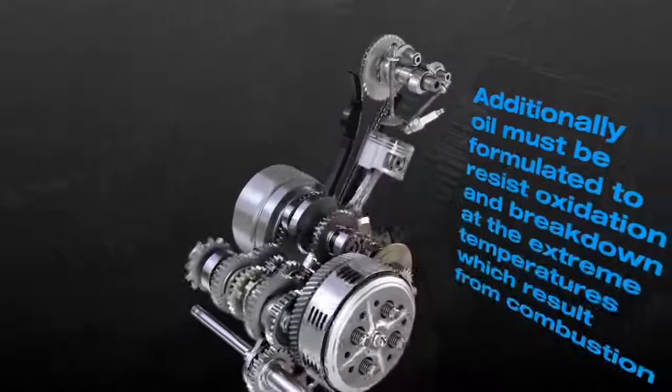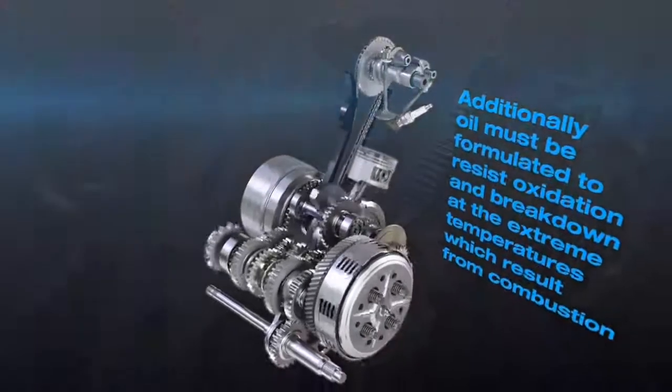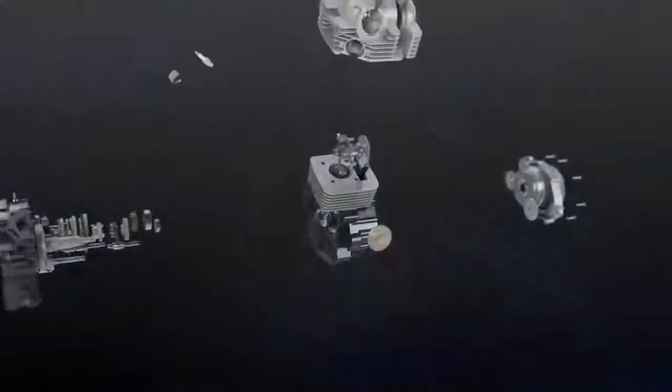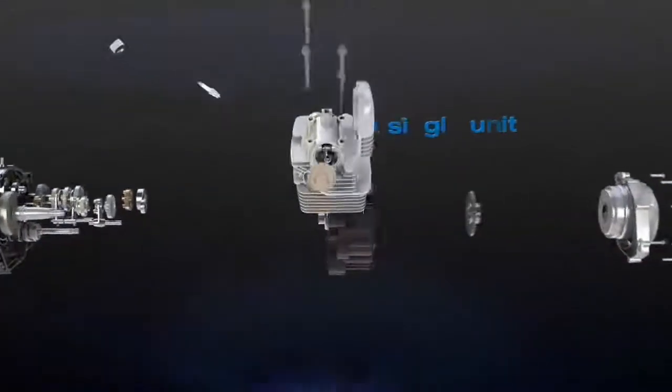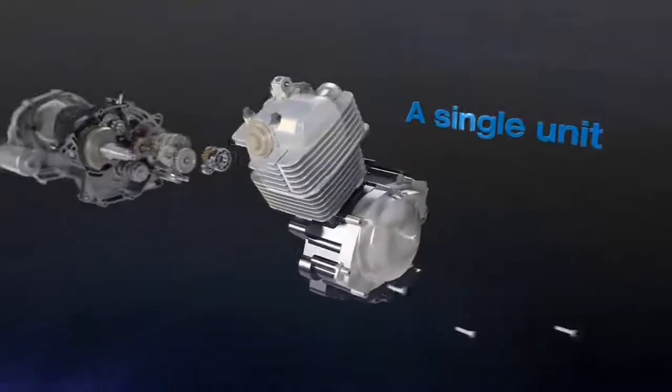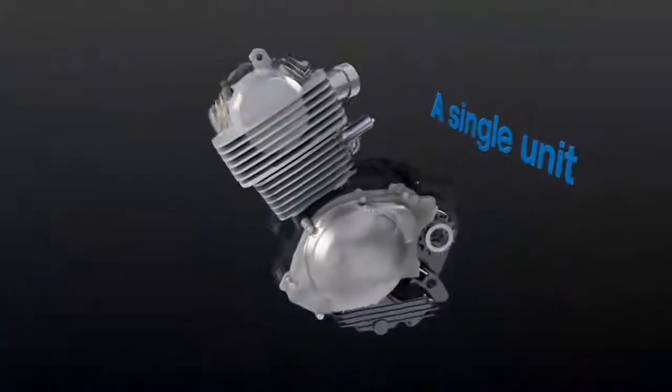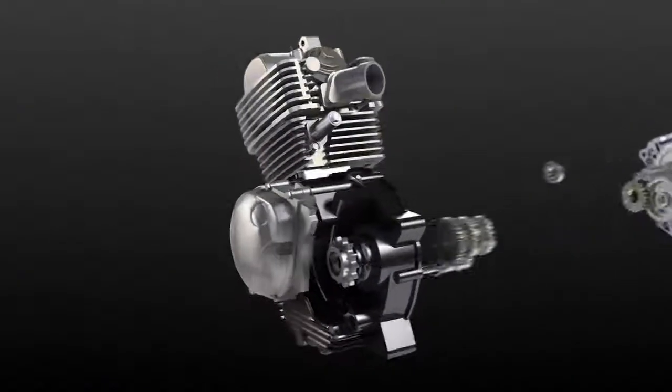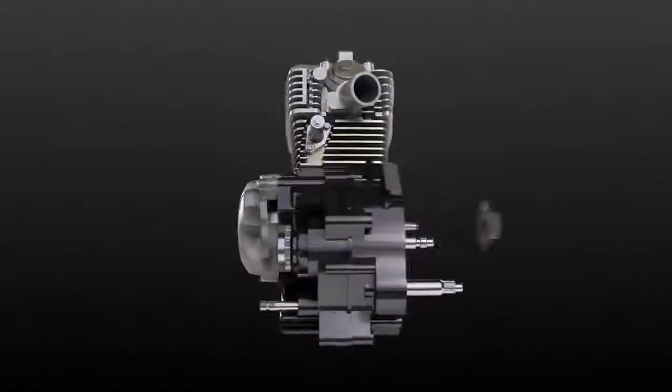Additionally, oil must be formulated to resist oxidation and break down at the extreme temperatures which result from combustion. Unlike passenger car engines, where engine and driveline components are installed and lubricated separately, motorcycles house all these components with their specific and often competing lubrication requirements in a single unit.